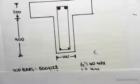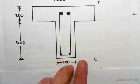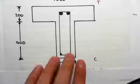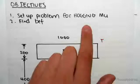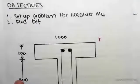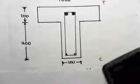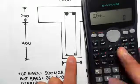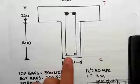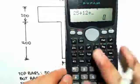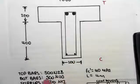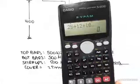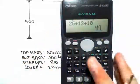We're first going to work out the depth to the centroids of the steel. For hogging, we always take it from the bottom. The cover is 25mm, then we add 12mm for the diameter of the stirrups, and then we add the radius of the bottom bar — the bottom bars are N20s, so we add 10mm for the radius. That gives us a total distance of 47mm.